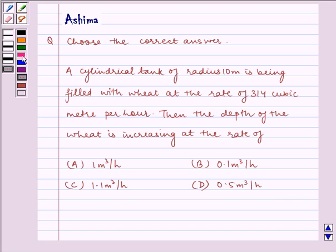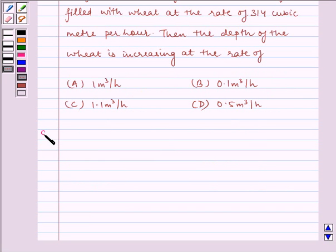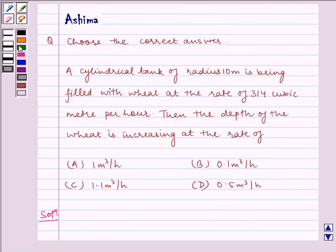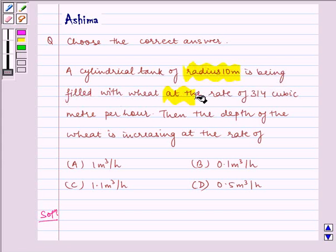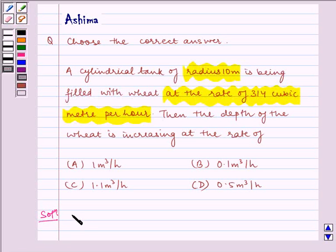Now let us proceed to the solution. It is given that a cylindrical tank of radius 10 meters is being filled with wheat at the rate of 314 cubic meters per hour. That is, dV/dt equals 314.